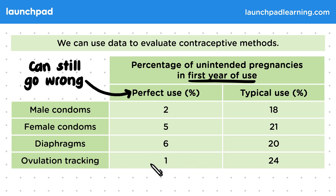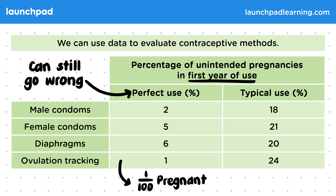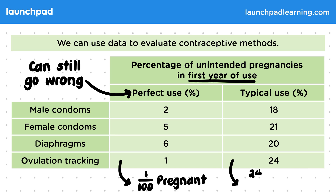So what do these numbers tell us? Let's start with this value here. By using ovulation tracking, there was 1% of unintended pregnancies in the first year of use — therefore one out of 100 people were pregnant within the first year. So just 1% of people that used ovulation tracking perfectly had an unintended pregnancy in the first year of use. However, with typical use there was 24% of unintended pregnancies in the first year of use, meaning 24 out of 100 people were pregnant within the first year.